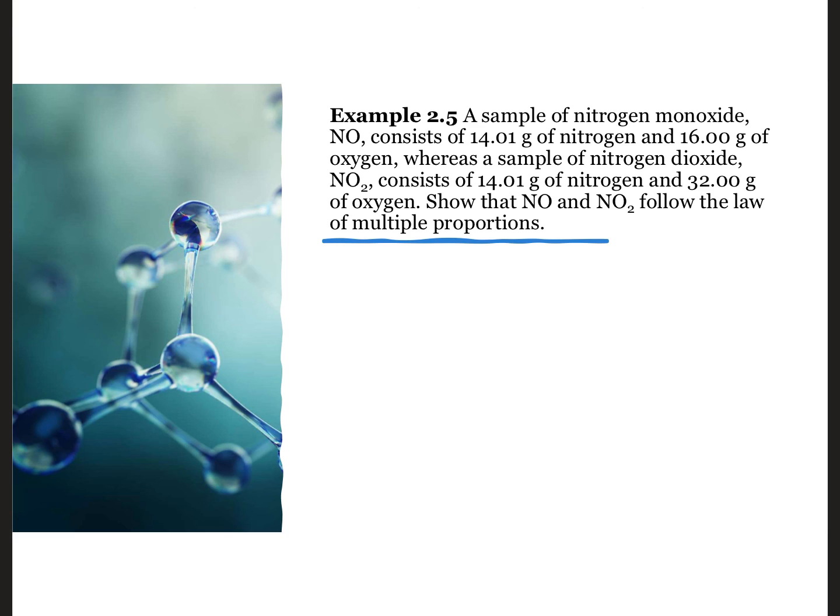Let's try this for another set of compounds where one of the masses is not set to 1 gram. A sample of nitrogen monoxide, NO, consists of 14.01 grams of nitrogen and 16.00 grams of oxygen, whereas a sample of nitrogen dioxide, NO2, consists of 14.01 grams of nitrogen and 32.00 grams of oxygen. Show that NO and NO2 follow the law of multiple proportions. We'll start by calculating the N to O ratio for both compounds.